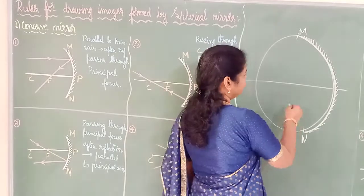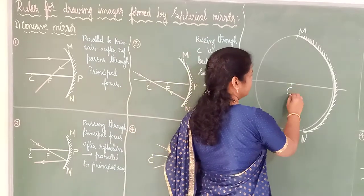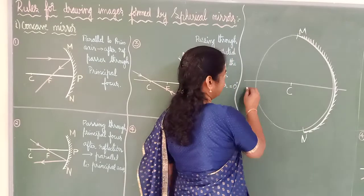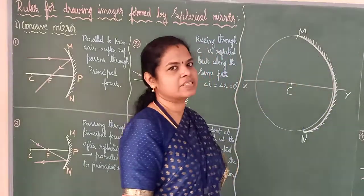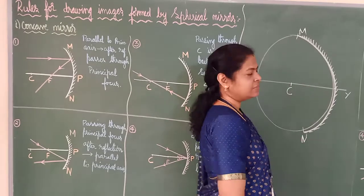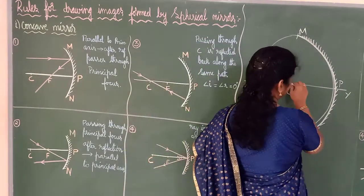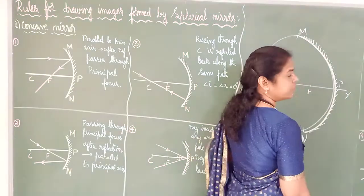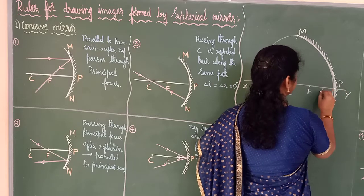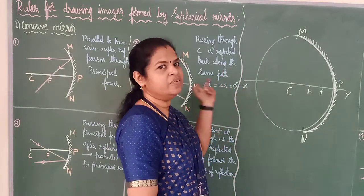This is a concave mirror. The center of the circle is denoted by capital C. This line moving through the center of the circle is called as the principal axis, denoted as X, Y. The point at which this principal axis passes through the mirror is called as pole, denoted as capital P. The distance between center of curvature and pole is called as F — that is principal focus. And between the principal focus and pole, this is mentioned as small f. These are the basic things you have studied. Keeping this in mind, we are going to see what are the rules.